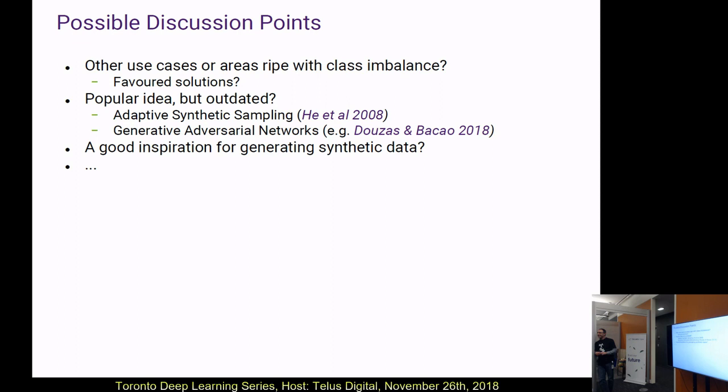A somewhat different question: if the examples from both classes are sufficient and balanced, could you use the same technique or a similar generator on both sides of the training data to increase cross-validation performance?